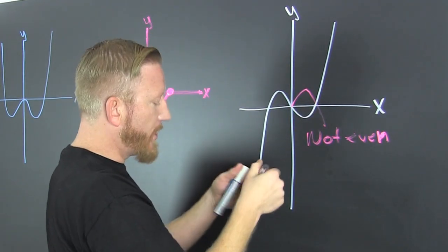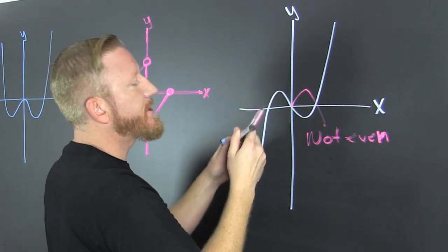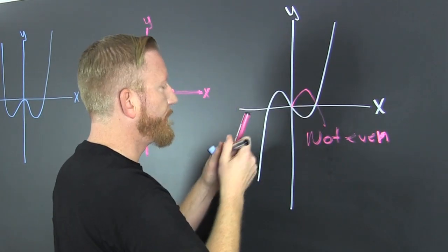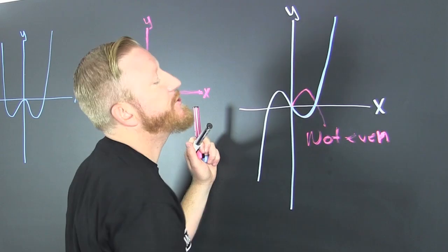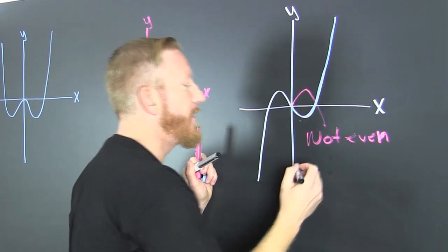And then what? Then we flip it across the x. So, does it lie on itself? Sure it does. So, this is odd.